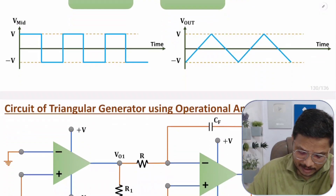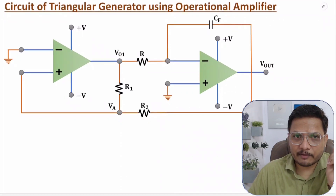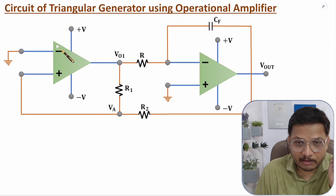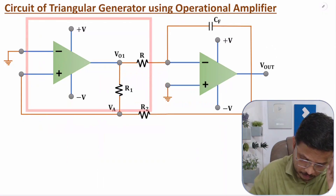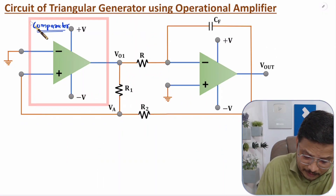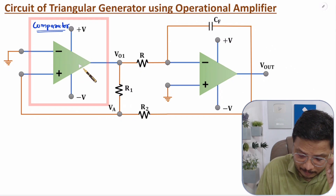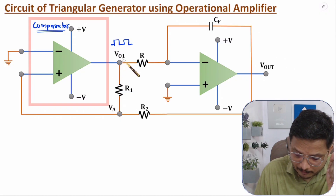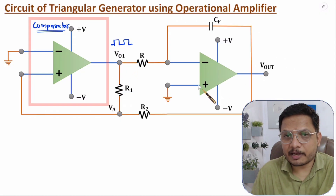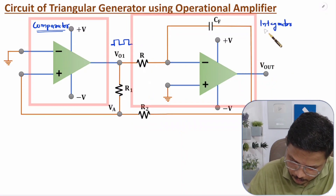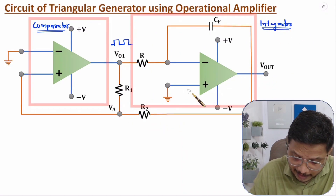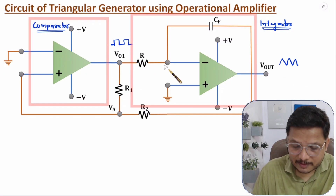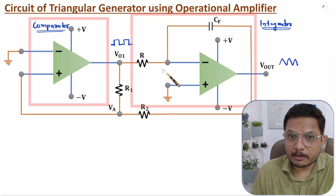Here, let us look at the circuit based on that block diagram. If you observe, we have two operational amplifiers. The first op-amp is used as a comparator, which generates a square wave at V01. The second op-amp is used as an integrator, which converts this square wave into a triangular wave.